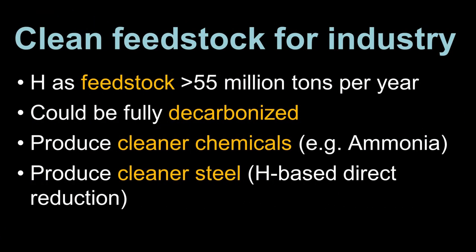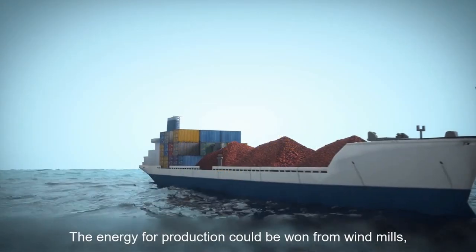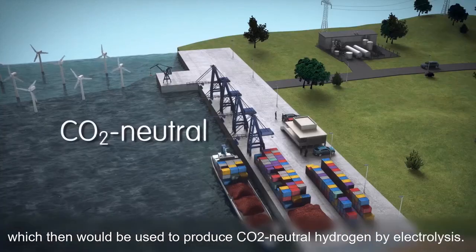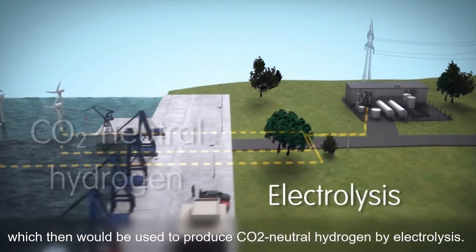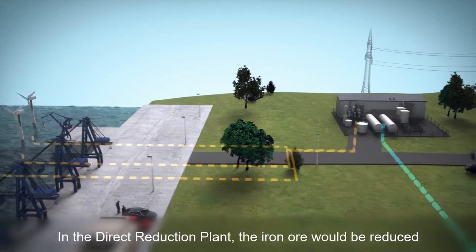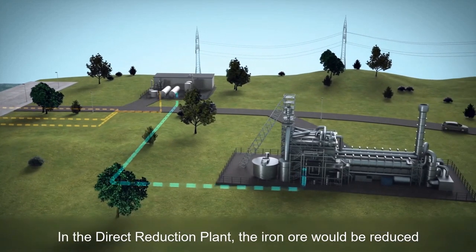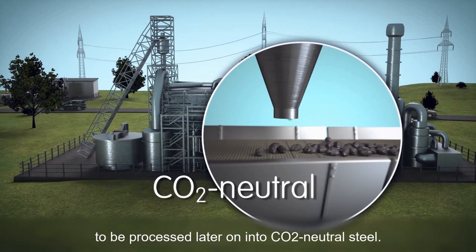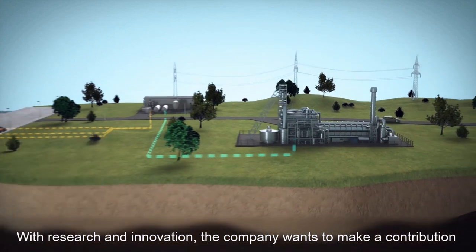Another major role of hydrogen is to provide clean feedstock for industry. The current use of hydrogen as industrial feedstock amounts already to more than 55 million tons per year. This huge amount is nowadays mainly provided by methane gas reforming, producing the so-called gray hydrogen. This could be fully decarbonized by using water splitting propelled by green energy sources. Hydrogen could also be employed to produce cleaner chemicals, CO₂-reduced green steel, and as a reducing agent for iron ore.